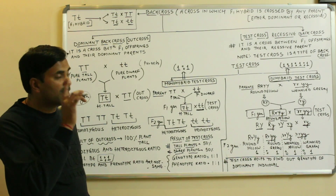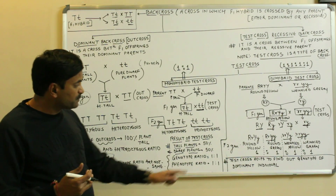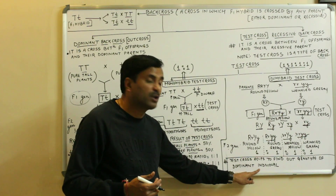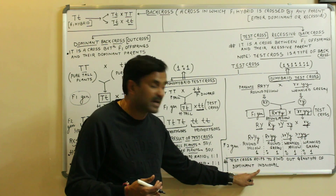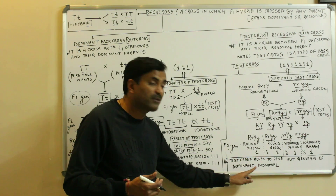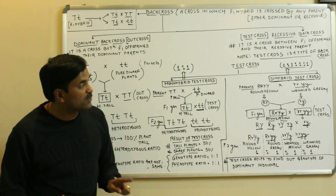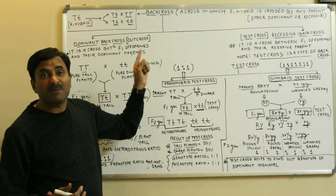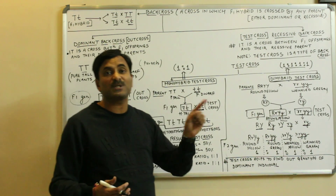One important thing to remember is why we do the test cross. The test cross helps to find out the genotype of the dominant individual — that is, whether it is homozygous or heterozygous. This video was based on the back cross, the out cross, and the test cross, which are very important crosses used in genetics.